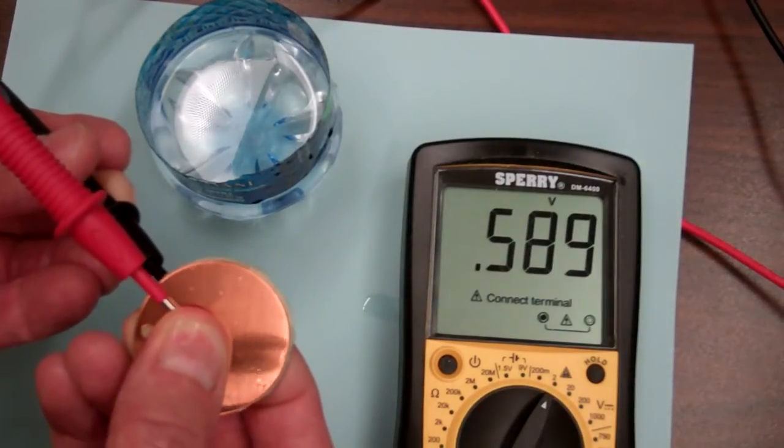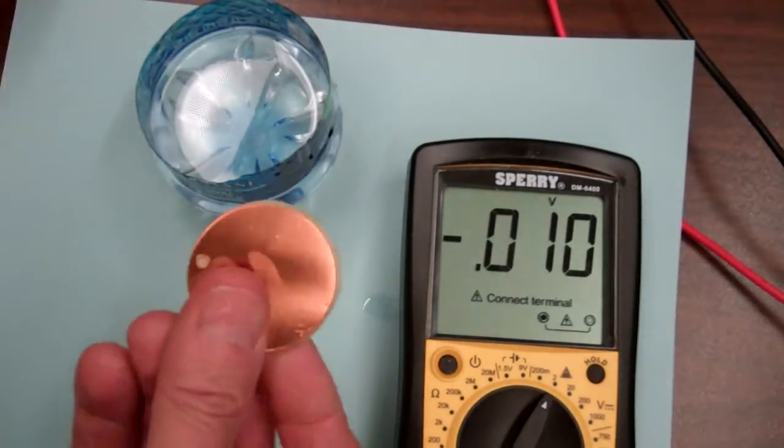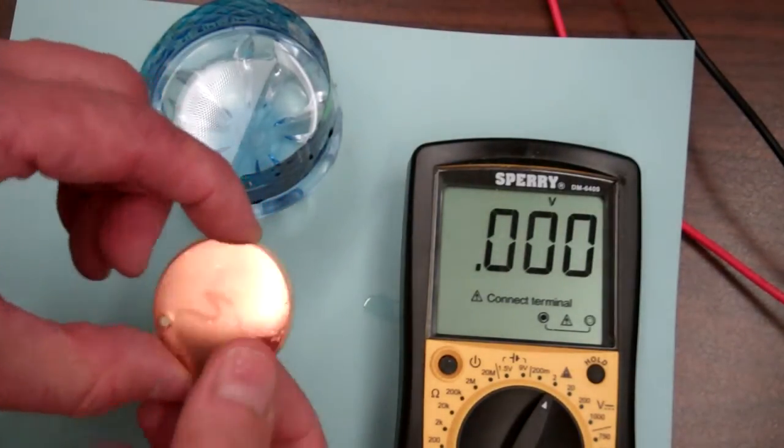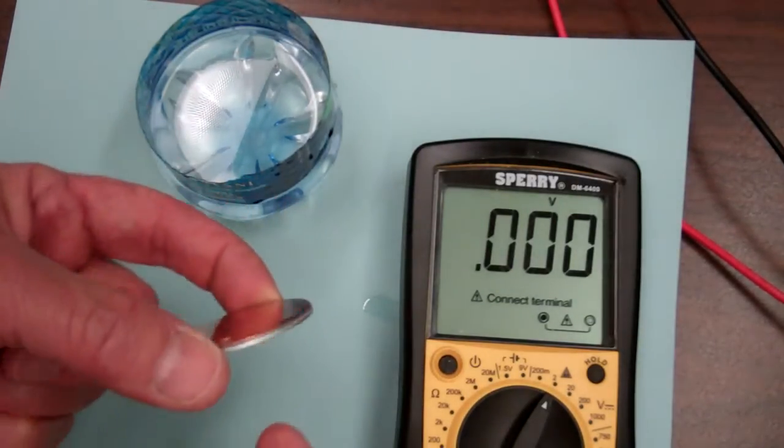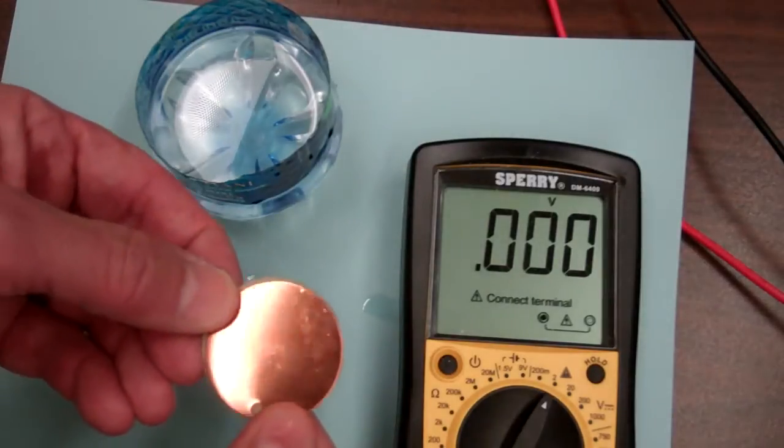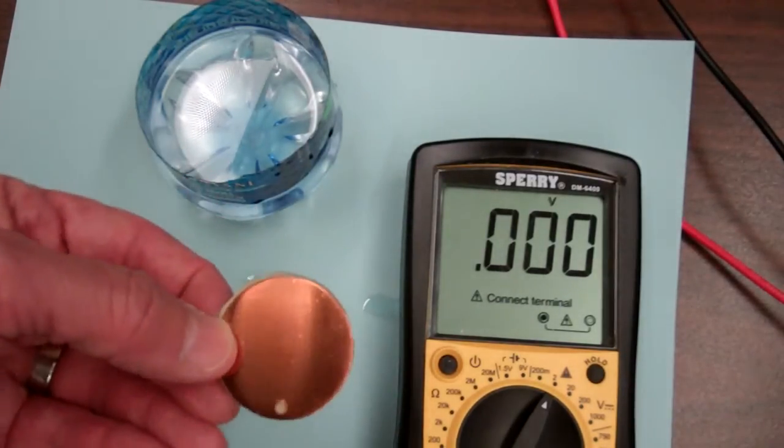So now what I'm going to do is construct a series of these cells and pile them together to form a Voltaic Pile. And what we'll see is that, just like Volta observed, the potentials, the voltages, will add when I stack these in series.